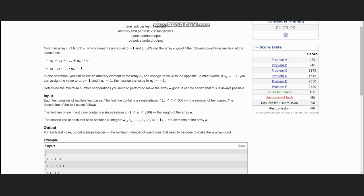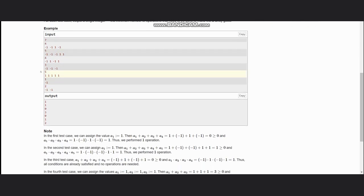Let's look at these test cases. First one is 4 elements: minus one, minus one, one, minus one. We can turn it into one, minus one, one, minus one. You can see the sum will be zero which is greater than or equal to zero, and the product will also be equal to one.